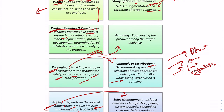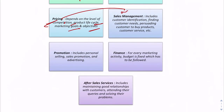After pricing comes sales management. The product has been made, branded, packaged, distributed, and priced — now it needs to be sold. Decisions must be taken on how to reach the consumer and persuade them to buy the product or service. Next is promotion — it is not enough to produce a product satisfying consumer needs; the consumer must be made aware of the product. The company decides how to communicate information about the product to the consumer.